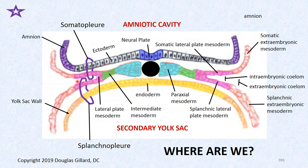In the last video we talked about how the lateral plate mesoderm developed a cavity called the intraembryonic coelom that communicated with the extraembryonic coelom or chorionic cavity. When folding occurs we're going to lose this. We created two new layers: the splanchnic lateral plate mesoderm and the somatic lateral plate mesoderm. That tissue combined with the ectoderm is given the name somatopleure; combined with the endoderm you get the splanchnopleure.